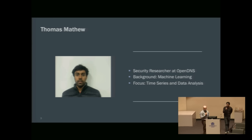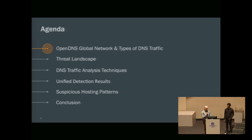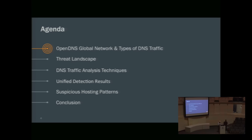My name is Thomas Matthew. I'm a security researcher at OpenDNS and my background is in machine learning and time series analysis. The outline in a nutshell: we'll start with an overview of OpenDNS's global view and the type of traffic we deal with, then cover the threat landscape we're focusing on, then talk about the actual methods of traffic analysis, discuss some very interesting results, look at the hosting infrastructures of malicious domains we catch, and then have a conclusion and open for questions.